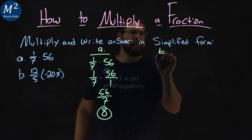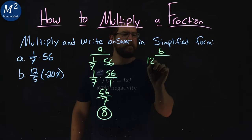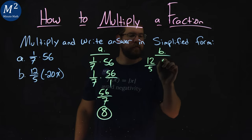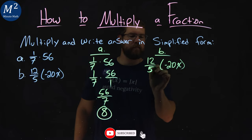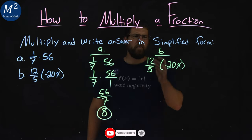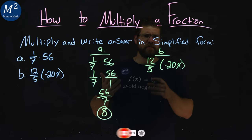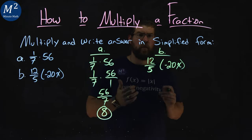Now part B: 12/5 times negative 20x. Well, negative 20x, like before, is negative 20x over 1. So let's rewrite that.